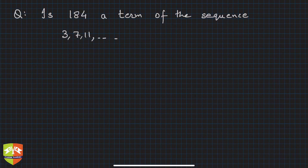So basically they are asking us to find out whether 184 belongs to the sequence, right? So somewhere here, 184 is there. That's the question. How to find out?